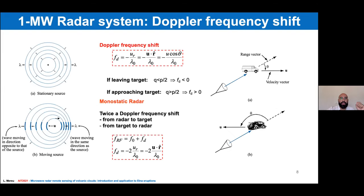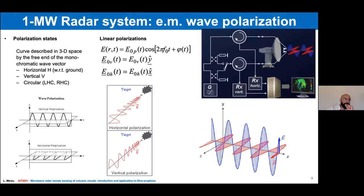Microwave radars are typically Doppler systems, meaning the system is able to observe targets in motion. We can observe that as a target moves, the frequency shifts. If the target is receding, we observe a decreasing Doppler frequency, or an increasing frequency if the target is approaching. The other main feature of microwave radar is polarization.